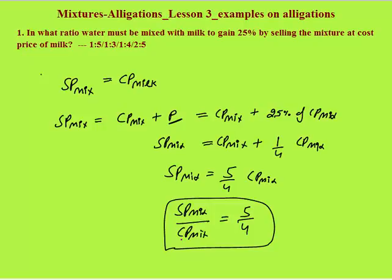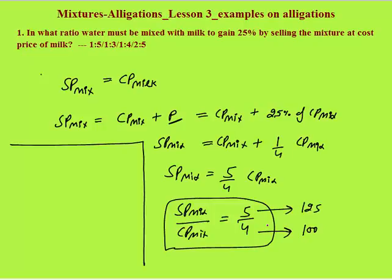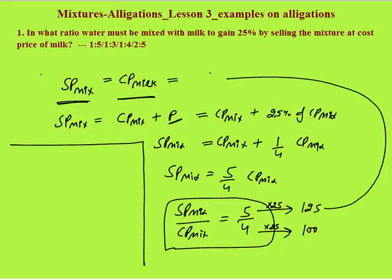If you want a profit of 25%, the selling price and cost price must be in the ratio 5 is to 4. For convenience, I am assuming cost price of mixture as 100 rupees. So 4 becomes 100 and 5 will become 125 — I am multiplying both by 25. Since selling price of mixture was cost price of milk, cost price of milk is also 125.